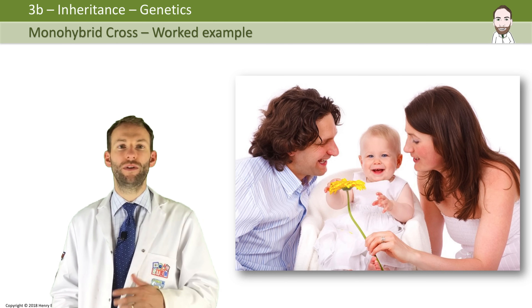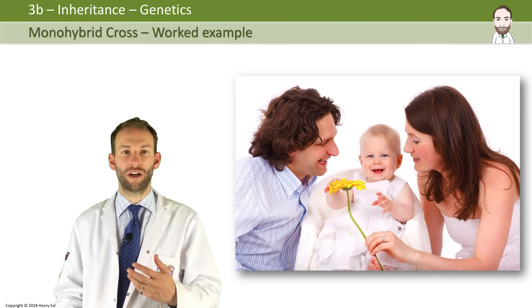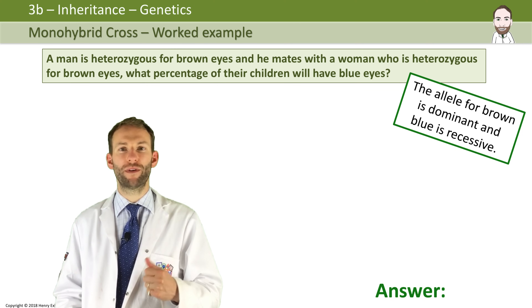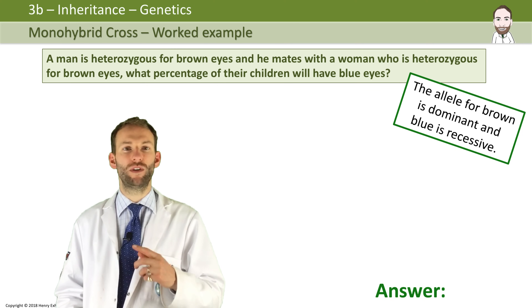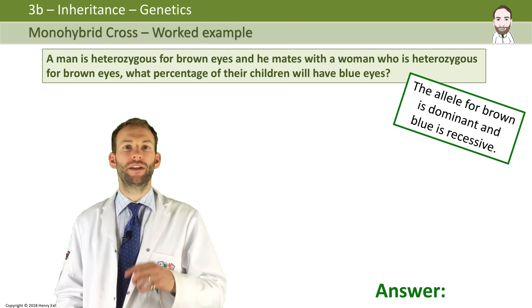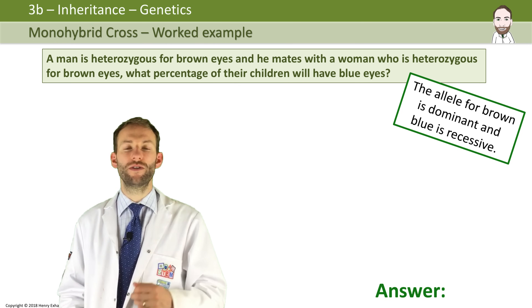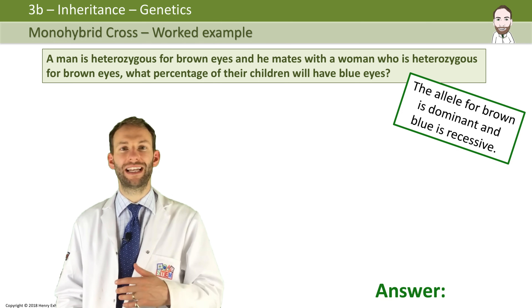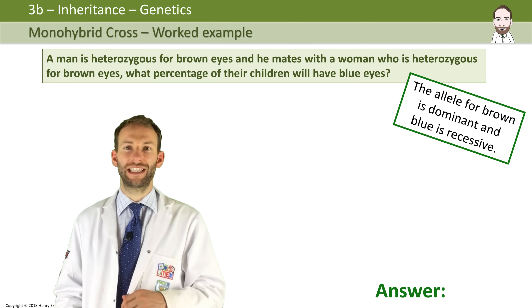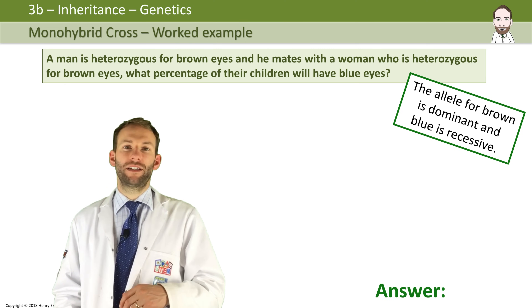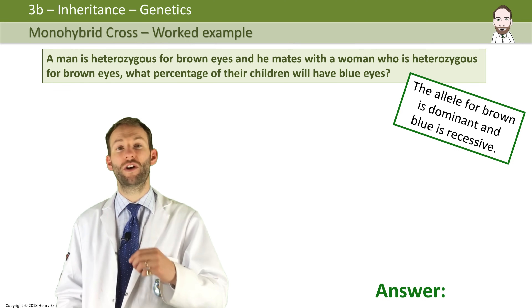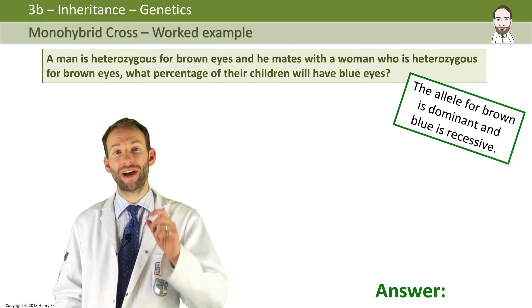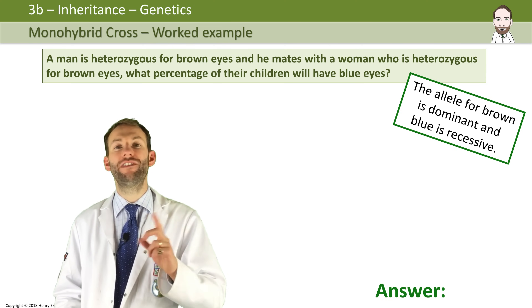Let's work through an example so you get the idea of how this works. Here's a question: a man and a woman both have brown eyes. What are their chances they will have a baby with blue eyes? We need to show this in a particular format. A man is heterozygous for brown eyes and he mates with a woman who is also heterozygous for brown eyes. Remember what heterozygous means? It means one of each allele.